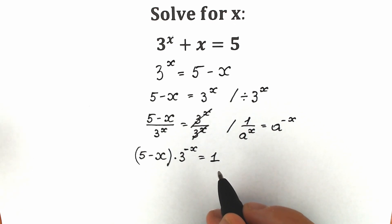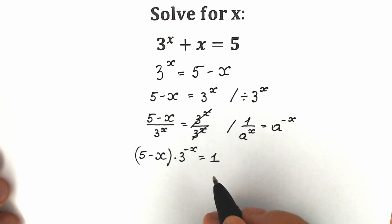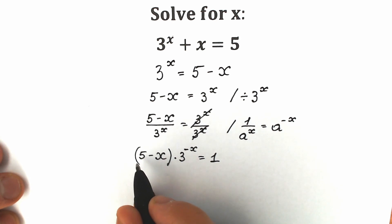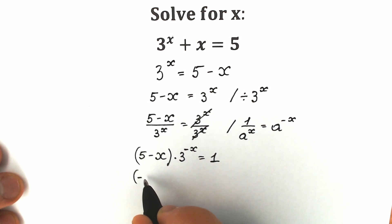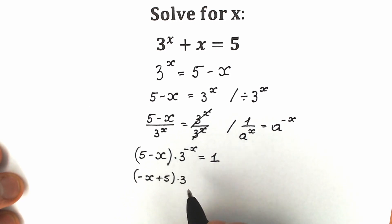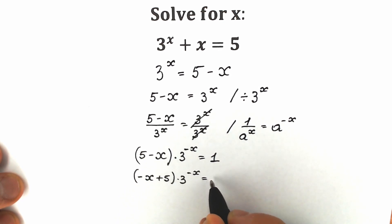Right now it's a really great setup because we need to remember the Lambert W function — we are going to apply it. But first, let's change the position here. It helps us a lot. We'll write minus x plus 5 times 3 to the power minus x equal to 1.